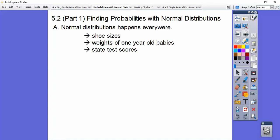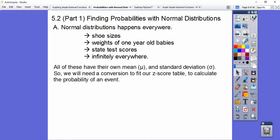State test scores are always normal, and they're infinitely everywhere. You can do the heights of trees or anything, but they always make a normal distribution on all of that stuff. So all of these have their own mean, which is mu in standard deviation, which is that sigma symbol.